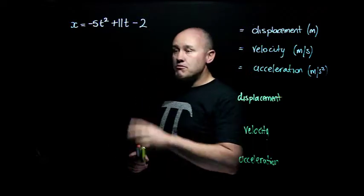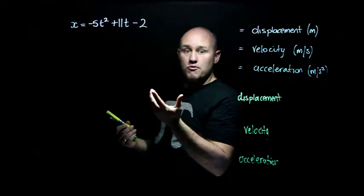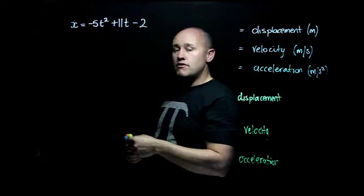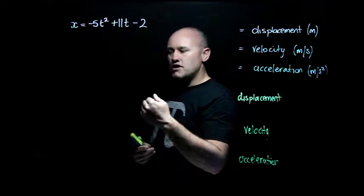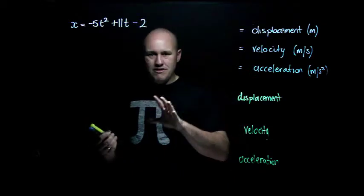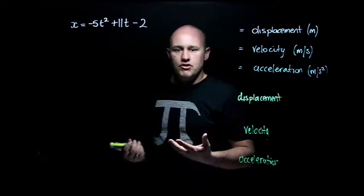This is a potential model for a projectile or some description, because negative 5 will turn into negative 10, and negative 10 will actually become the acceleration, which suits approximately - it's more like negative 9.8 - but it suits the acceleration that we feel due to gravity on Earth.